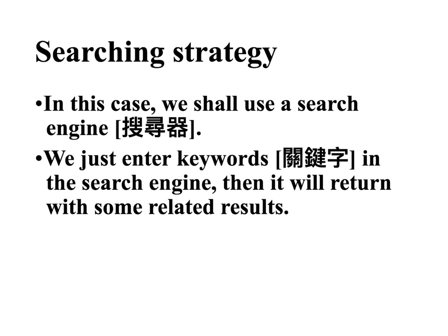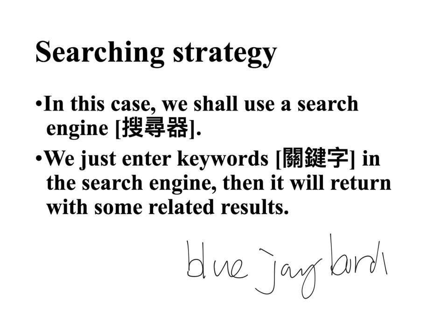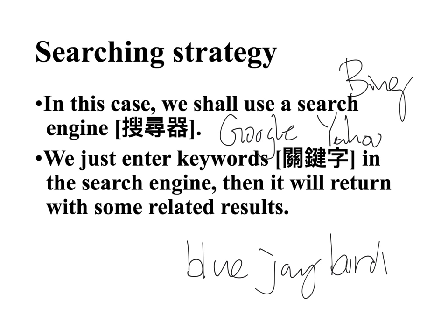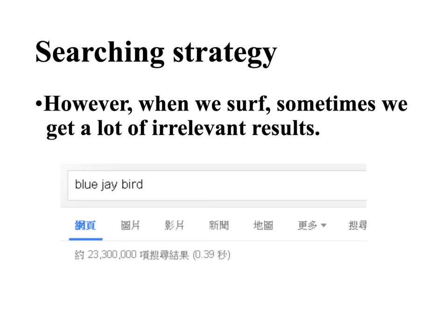For this time we may type 'blue jay bird' in the search engine. Examples of search engines are Google, Yahoo, and Bing. However, when we type in the browser we may get lots of results, and some of them may not be related to our topic.